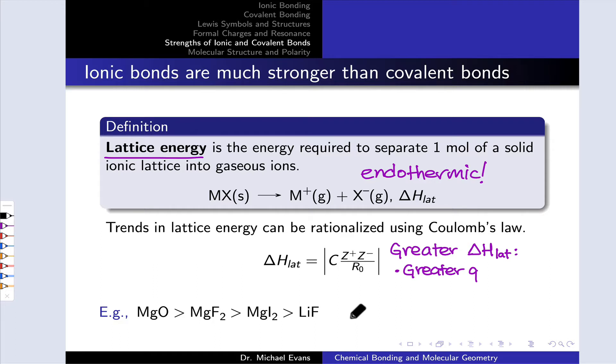The second important structural factor is R₀, the distance between the centers of the ions. Because that appears in the denominator, smaller R₀, smaller ions are associated with a greater lattice energy. In essence, this puts the charged particles closer to one another, makes the force of electrostatic attraction greater.